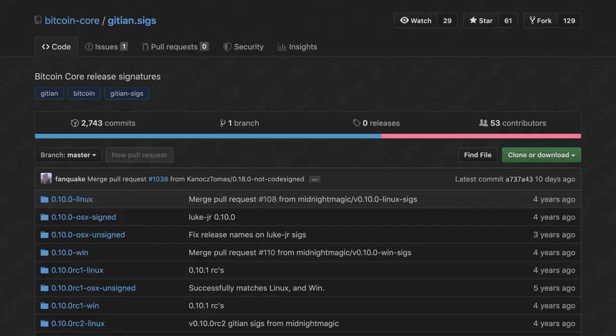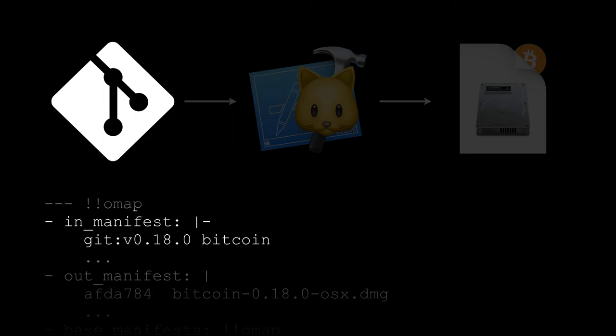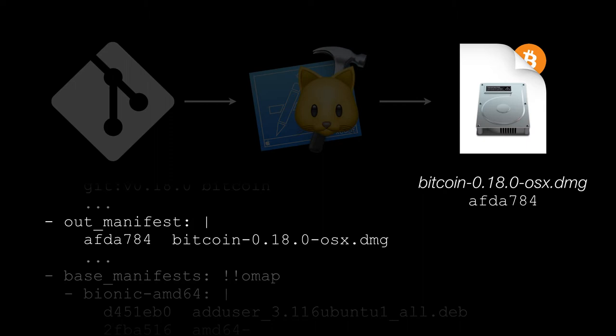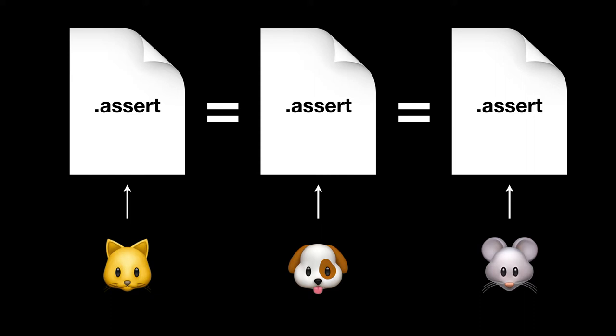In fact, there is a repository called Gitian.sigs where maintainers upload signed Gitian.assert files. These files are generated by the build process and declare what source code they used and what the resulting hash of the binary output is. This hash should be identical to the hashes of the binary we downloaded from bitcoincore.org, and if they differ, we know that something is wrong. These .assert files are generated whenever we do a Gitian build from source, and when generated by different people, these Gitian.assert files should still agree with each other — and if they don't, we know something's up.